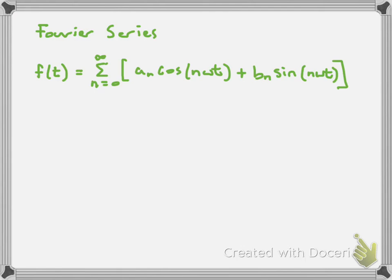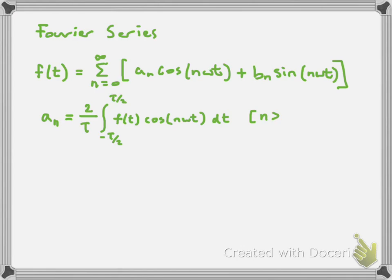The trick for this series is figuring out what values to use for a_n and b_n — that's the hard part. Fortunately, it's been worked out. The formula for a_n, the coefficient of cosine, is a_n = (2/τ) times the integral from −τ/2 to τ/2 of f(t) cosine(nωt) dt, for all n ≥ 1.